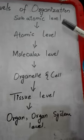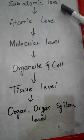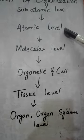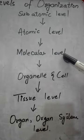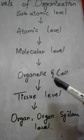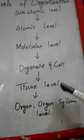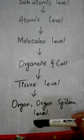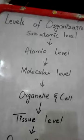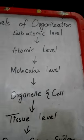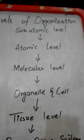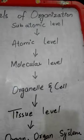First of all, the number one is subatomic level. Next to that is atomic level. After that comes the molecular level. Next to that is organelle and cell level. After that is tissue level. And after that organ and organ system level. Here are certain more levels which are remaining which we will learn tomorrow. But today starting with the basic.